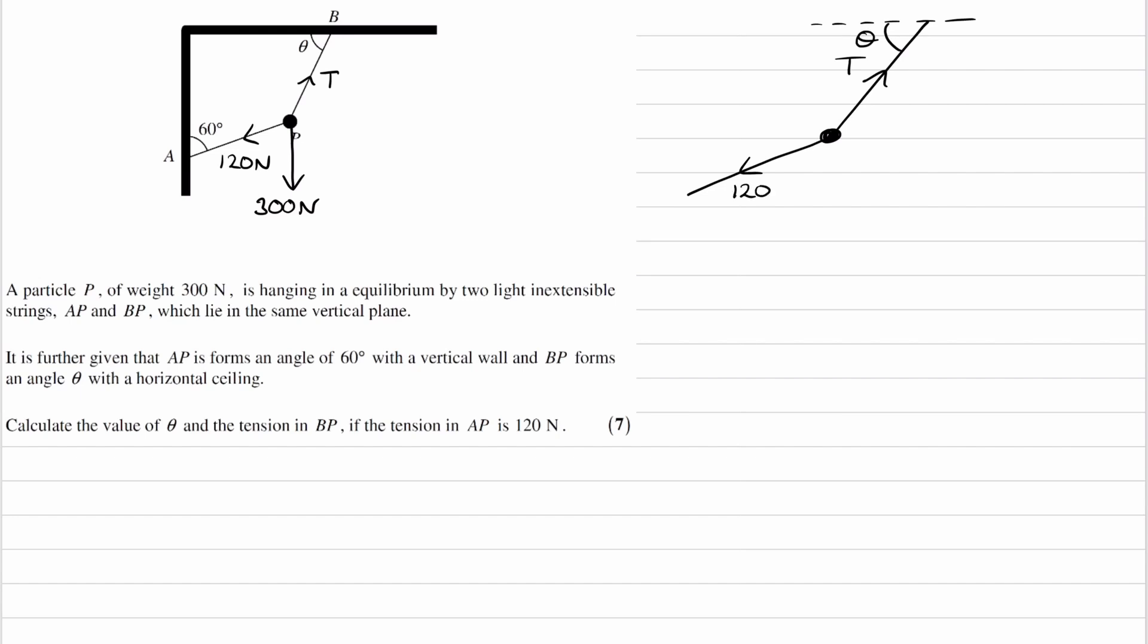And then we are given an angle to the vertical, that is 60. And we also have our weight force, which is 300 downwards.